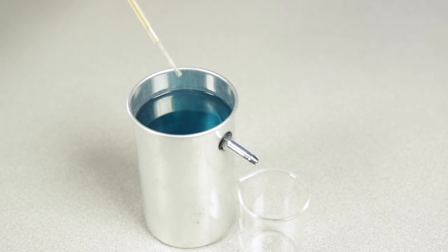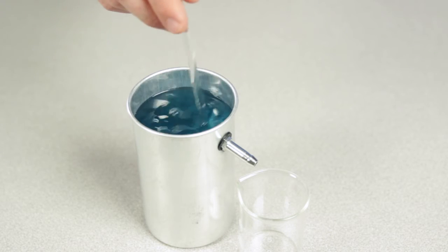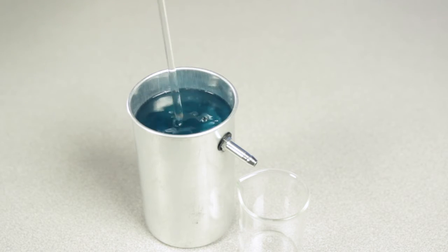For greater accuracy, add a small amount of liquid soap to the water already in the can. Stir gently using a stir rod. Adding soap reduces surface tension that may inhibit water from pouring from the spout.